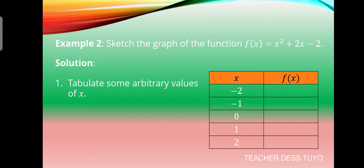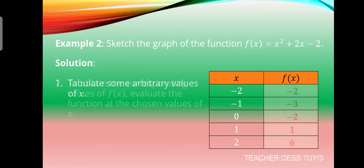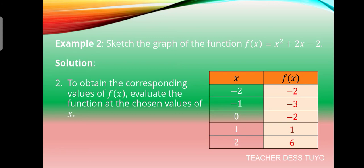We substitute each value of x into the given function. When x = negative 2, f(x) = negative 2. When x = negative 1, f(x) = negative 3. When x = 0, f(x) = negative 2. When x = 1, f(x) = 1. When x = 2, f(x) = 6.